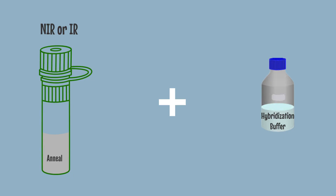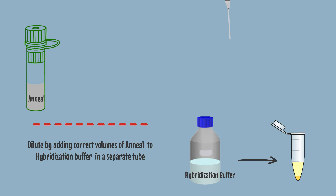You will need an NIR or IR Anneal and Hybridization Buffer. Dilute by adding correct volumes of anneal to hybridization buffer in a separate tube.